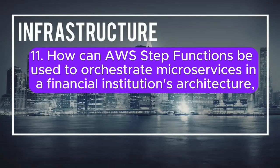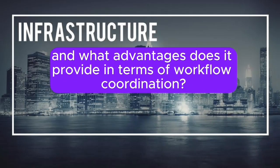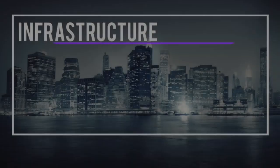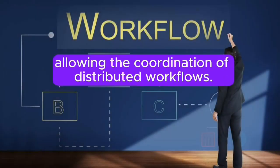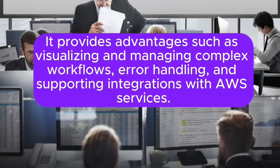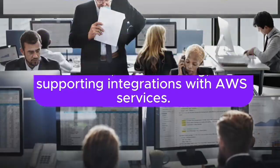Question 11: How can AWS Step Functions be used to orchestrate microservices in a financial institution's architecture, and what advantages does it provide in terms of workflow coordination? Answer: AWS Step Functions orchestrate microservices in financial institutions, allowing the coordination of distributed workflows. It provides advantages such as visualizing and managing complex workflows, error handling, and supporting integrations with AWS services.